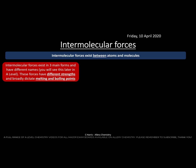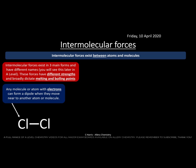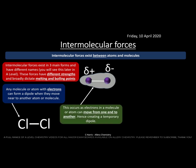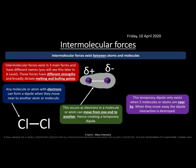Any molecule or atom that has electrons can form a dipole when they move near each other. A dipole — 'di' meaning two, 'pole' meaning polarity — has two charges. This occurs as electrons in the molecule or atom move from one end to another; it's not fixed. This creates a temporary dipole only when two molecules are nearby each other.